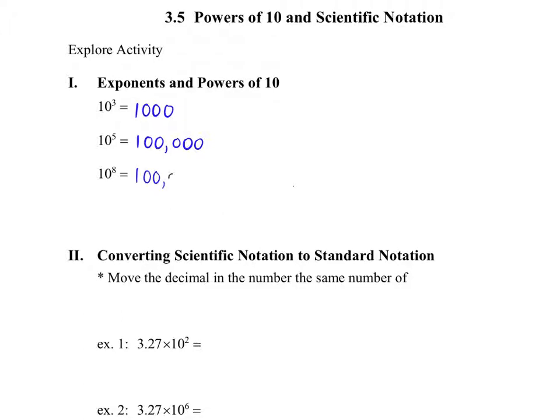10 to the eighth, then, is going to be a 1 with 8 zeros. So 1, 2, 3, 4, 5, 6, 7, 8. Usually people probably write out the whole number, then they go back and they put commas in, because you always start with where the decimal point is, and then you go 3 away from the decimal, put a comma, another 3, put a comma, that type of thing.